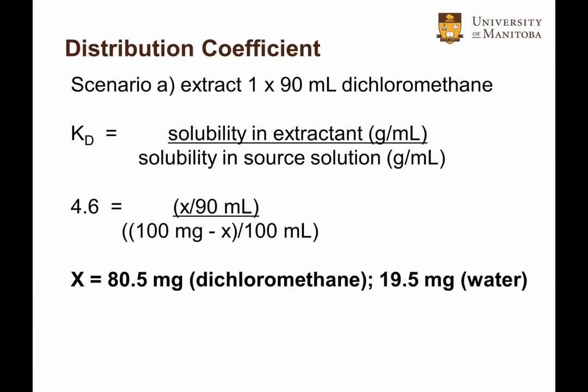Here's a look at the math. In scenario A, starting with 100 milligrams caffeine and 100 milliliters of water, then 90 milliliters of dichloromethane is added. Some amount of caffeine, X, will end up in that layer, while the aqueous layer will lose that amount, therefore 100 minus X. Solving for X, we get 80.5 milligrams. Therefore, in the dichloromethane layer, we have 80.5 milligrams of caffeine, while 19.5 milligrams of caffeine remains in the aqueous layer.